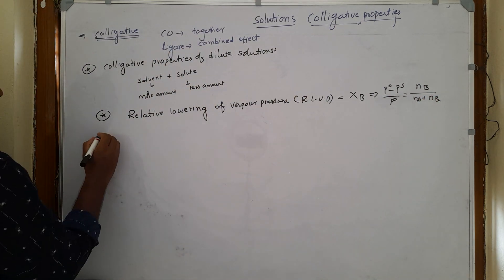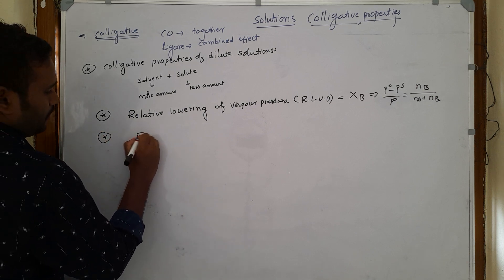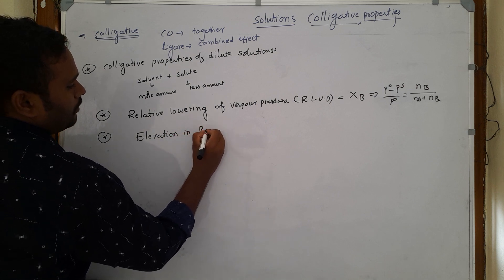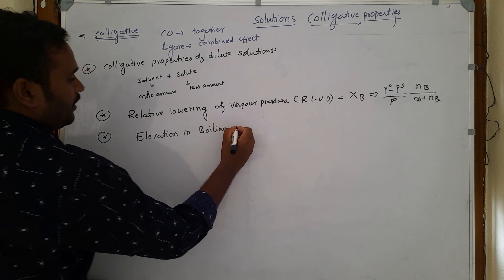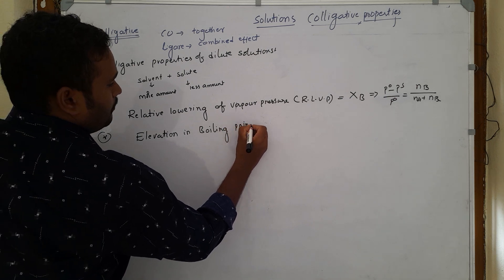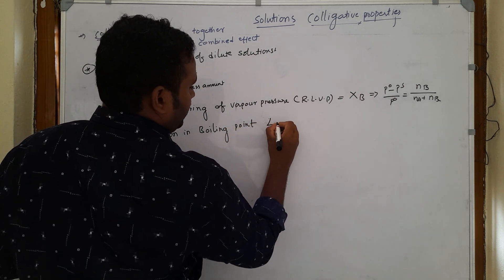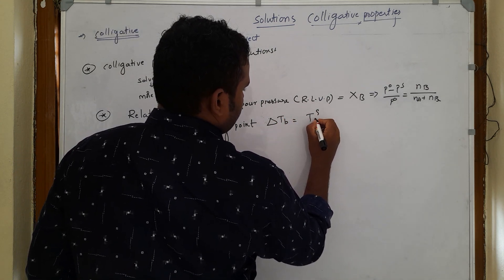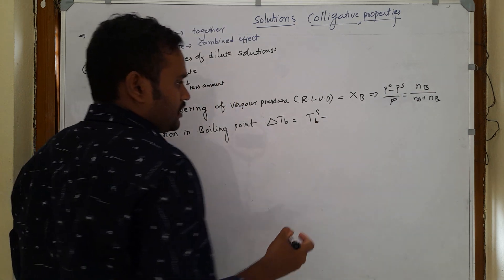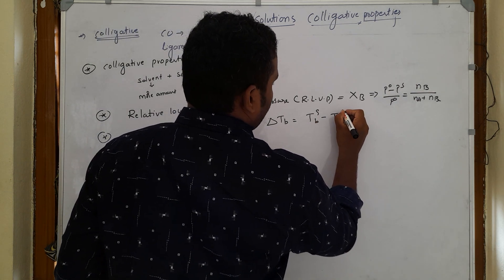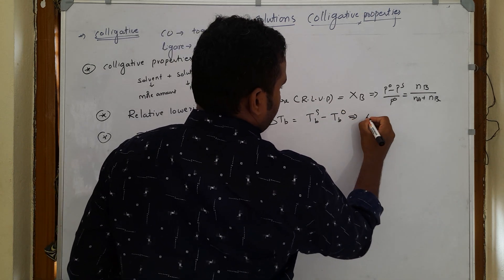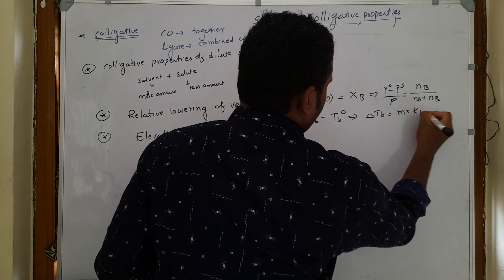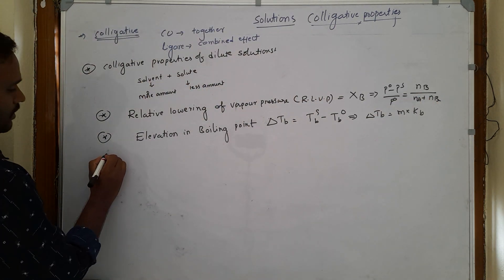The second colligative property is elevation in boiling point. It is shown as delta Tb. Delta Tb equals the boiling point of solution minus the boiling point of pure solvent. This implies delta Tb equals M into Kb. Those are the formulas we use.